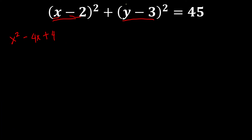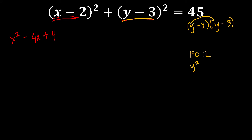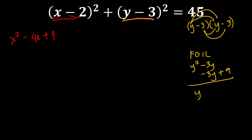Now for (y minus 3) squared, let's use the FOIL method. (y minus 3) squared can be expressed as (y minus 3) times (y minus 3). First terms: y times y gives y squared. Outer terms: y times negative 3 gives negative 3y. Inner terms: negative 3 times y gives negative 3y. Last terms: negative 3 times negative 3 gives positive 9. Combining like terms, negative 3y plus negative 3y is negative 6y. So (y minus 3) squared equals y squared minus 6y plus 9.